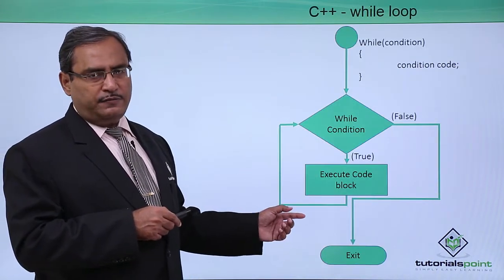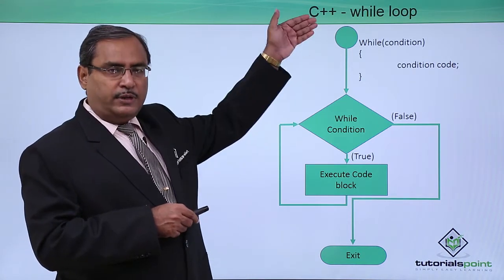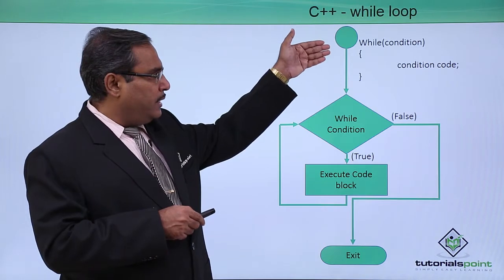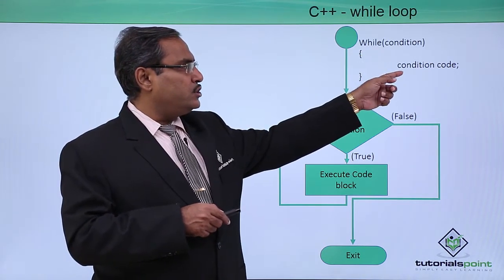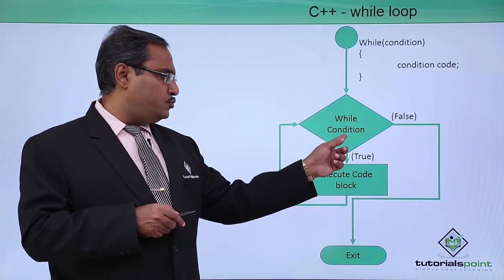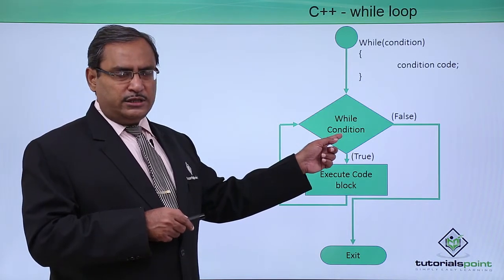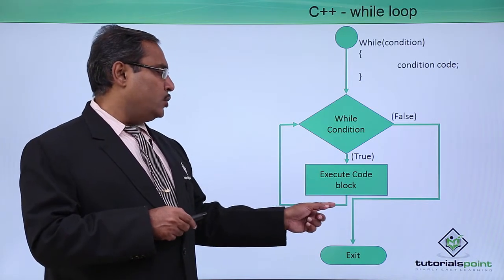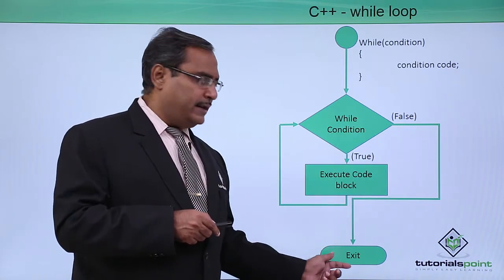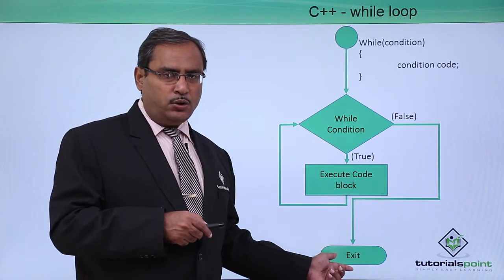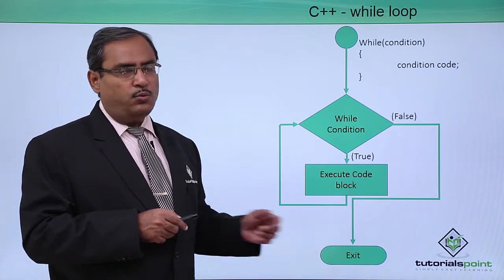Here is the respective flowchart. Control comes from the upper part of the program into the while condition where the condition code is written. If the condition is true, then the code block executes. Again the condition will be checked — if true, it executes the code block again; if false, the control comes out and exits, terminating the program.